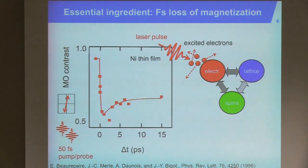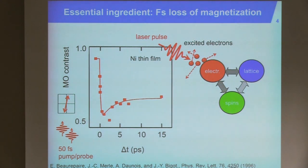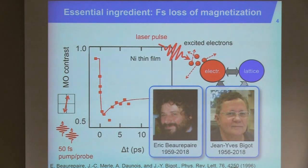The first experiment in 1996 used femtosecond laser pulses in a pump-probe experiment, measuring magneto-optical contrast at a certain time delay after heating a ferromagnetic thin film — nickel in this case. Surprisingly, at least in those days, the magnetic moment disappeared well within the first picosecond, a couple of hundred femtoseconds. You can describe this in terms of different interactions between the electronic, lattice, and spin degrees of freedom. Very sadly, earlier this year both the first and last author of this pioneering work passed away — a big loss for the field, and truly a tragedy.